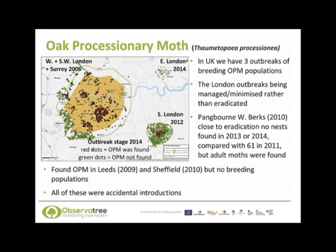There is a smaller outbreak in Bromley and Croydon in south London, which was discovered in 2012. There is another one in Pangbourne in West Berkshire, which was recorded in 2010. In this map the red dots illustrate where the oak processionary moth was found, whilst the green dots illustrate places where they were looked for but not found.